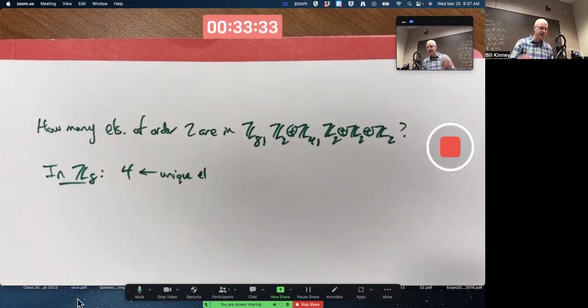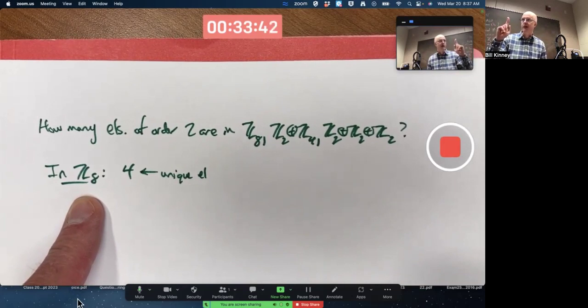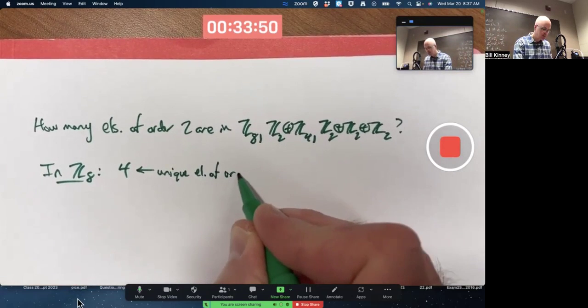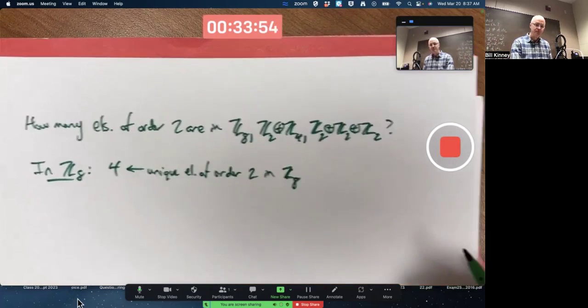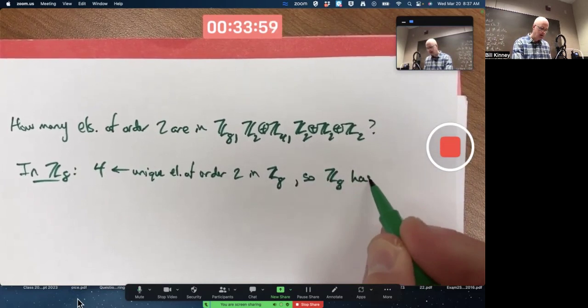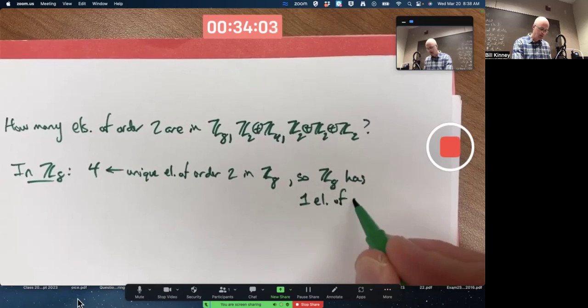In fact, if you think about the fundamental theorem of cyclic groups, Z8 is a cyclic group. There's got to be a unique subgroup of order two, and any group of order two has just one generator. There's got to be a unique element of order two. It's four. This is the unique element of order two in Z8. So Z8 has one element of order two.